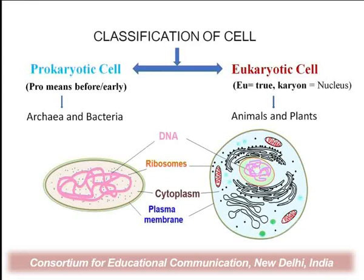How do we define cell classification? We define cells into two major groups: prokaryotic cells and eukaryotic cells. 'Pro' means before or early, 'karyon' means nucleus — so prokaryotic means before nucleus, meaning the prokaryotic cell has no membrane-bound nucleus. In prokaryotic cells, the DNA genetic material is present in the cytoplasm in the form of a nucleoid. In eukaryotic cells, there is a true nucleus — a membrane-bound nucleus — where the genetic material is bounded by the nuclear envelope.